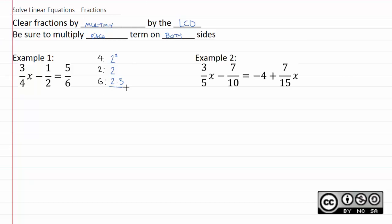Then we put it all together. And remember, for the LCD, you just take the highest power of whatever you see. In this case, we get two squared times three, which is twelve. So our LCD is twelve.